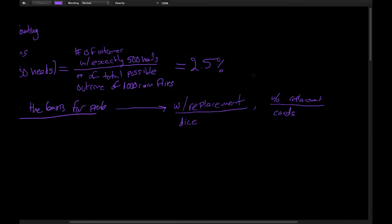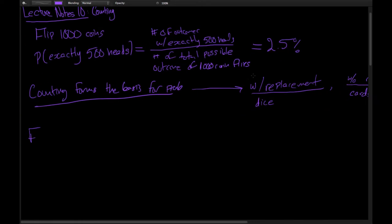There are two different ways we're going to need to count. The first is with replacement and the second is without replacement. For with replacement, imagine rolling dice — if you roll a six on a given turn, that doesn't mean you can't roll a six on the next turn. Without replacement, imagine a deck of cards: if you draw the ace of spades on the first draw, you're unable to draw it again on the next.